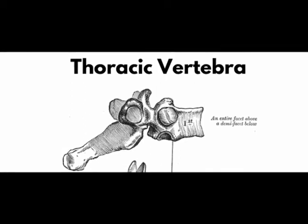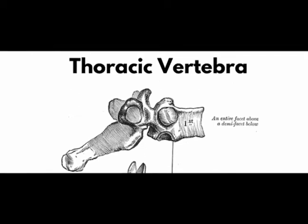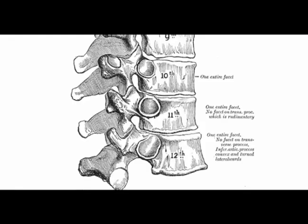T1 also has a long, flat, almost horizontal spinous process similar to those of cervical vertebrae, that may be as long as the vertebral prominence of C7.